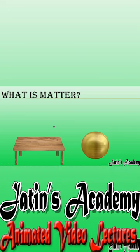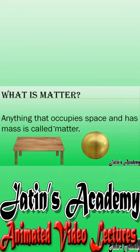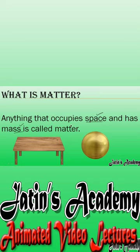As the chapter name suggests, we should know what matter is. Anything that occupies space and has mass is called matter. Whatever things we see in our surroundings — like a table, chair, ball, pen, pencil — they all occupy space and have some mass. They are not weightless or massless. So the property by which anything occupies space and has mass is known as matter.